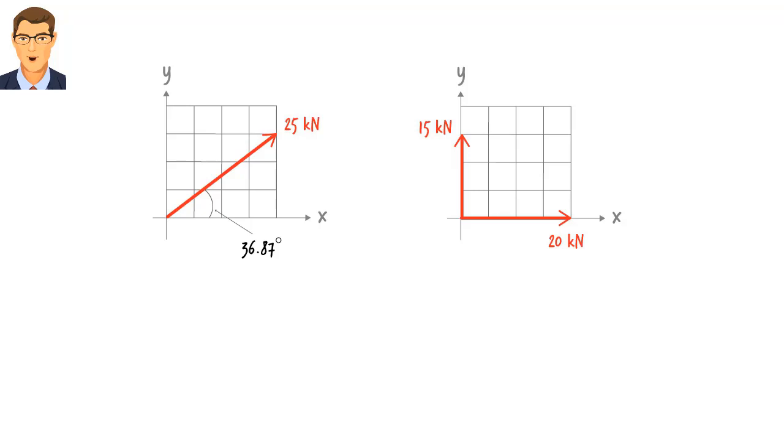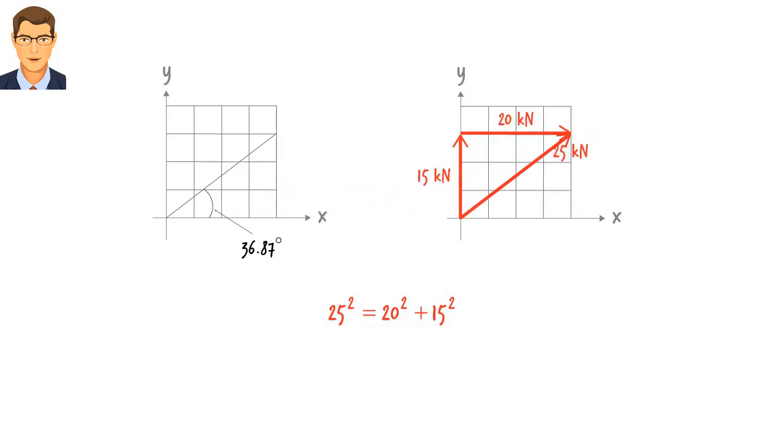A vector and its x and y components always form a right triangle, like this. The length of each side of the triangle represents the magnitude of a vector. This length represents the magnitude of our 25 kN force. This length represents the magnitude of the x component of the force, 20 kN. And this length represents the magnitude of the y component of the force, which is 15 kN. Note how the Pythagorean theorem holds true here. Alternatively, instead of shifting the y component of the force, we can shift its x component in order to form a right triangle, like this.